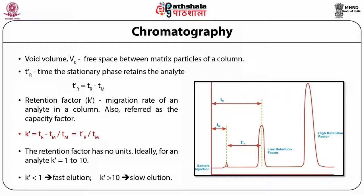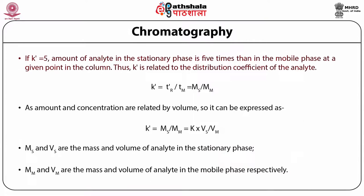The retention factor has no units. Ideally for an analyte it should be between 1 and 10. A retention factor less than one represents fast elution and accurate determination of retention time is very difficult in such cases, while a high retention factor means slow elution. If the value of capacity factor is equal to 5, then the amount of analyte in the stationary phase is 5 times that in the mobile phase at a given point in the column. The capacity factor k' is thus related to the distribution coefficient of the analyte.